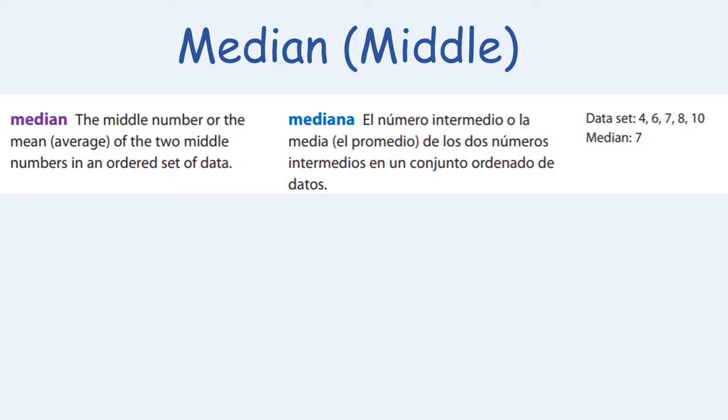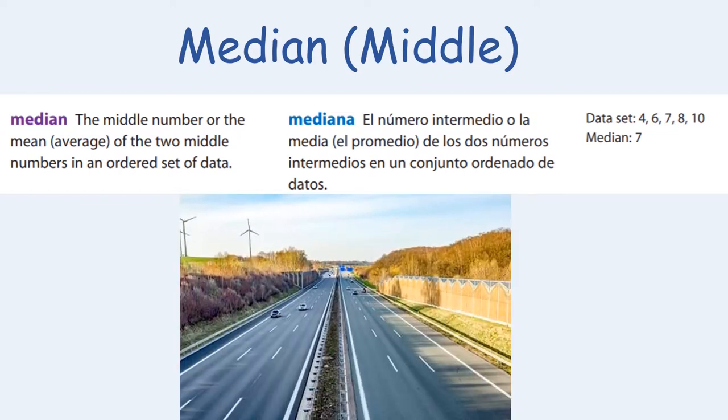Now let's look at the definition of the median. The median is the middle number, or the average of the two middle numbers, in an ordered set of data. Look at the image on the screen — the median is the center partition that separates opposing roadways, a great visual to remember that the median is the middle number.